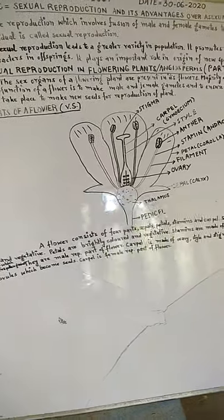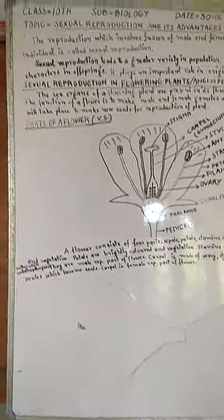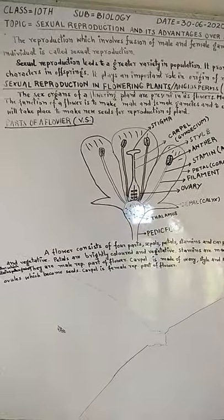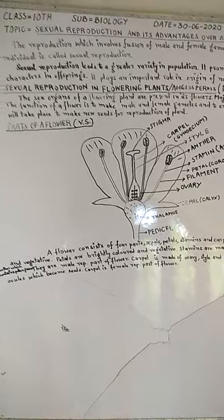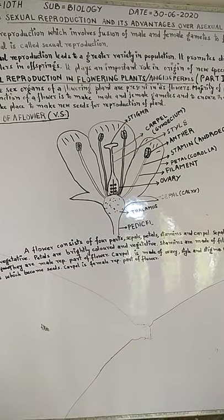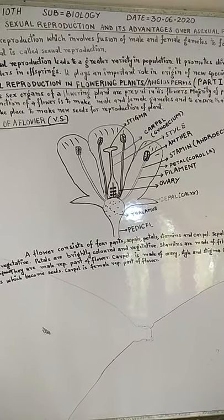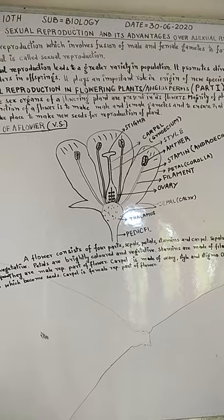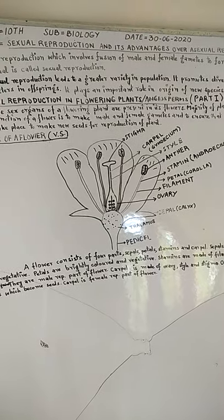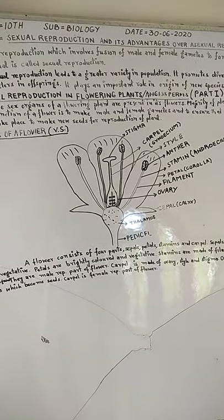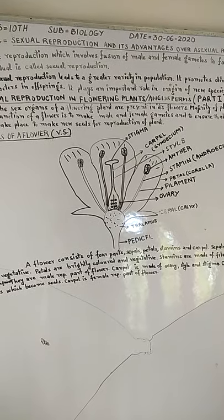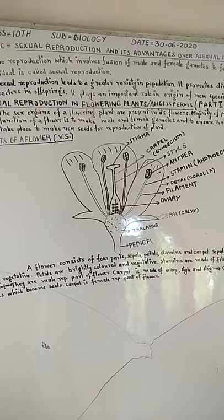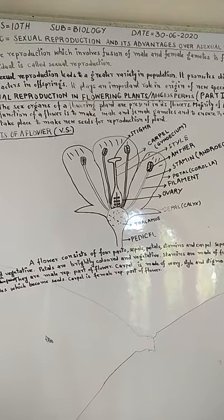First of all, what is sexual reproduction? The reproduction which involves fusion of male and female gametes to form a new individual is called sexual reproduction.